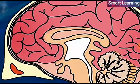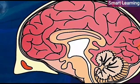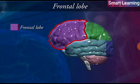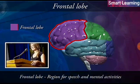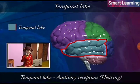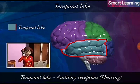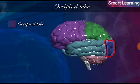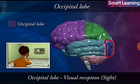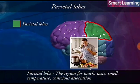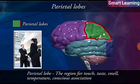The second region is the cerebral hemispheres or cerebrum, which forms the largest part of the brain. Each cerebrum is divided into four lobes: the frontal lobe, which is the region for speech, facial muscular activities, and higher mental activities; the temporal lobe, which is the region for auditory reception and hearing; the occipital lobe, which is the region for visual reception and sight; and the parietal lobe, which is the region for touch, taste, smell, temperature, and conscious association.